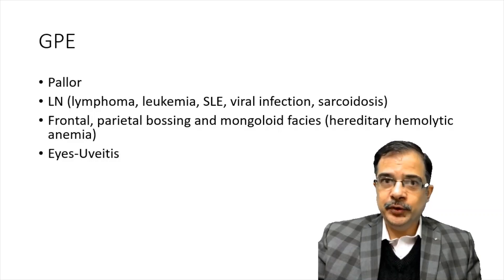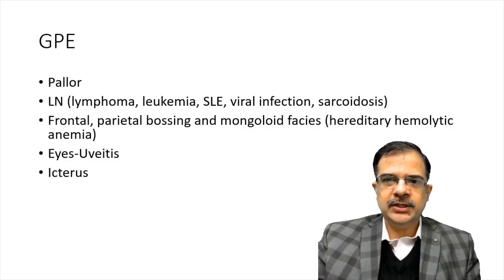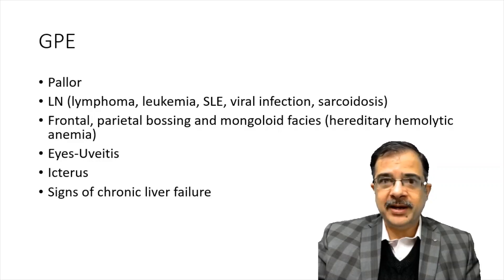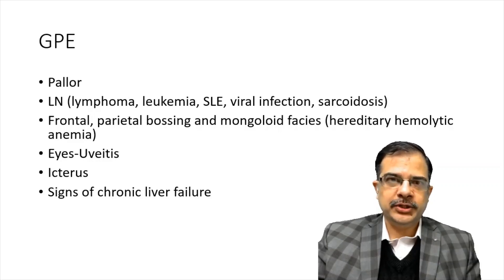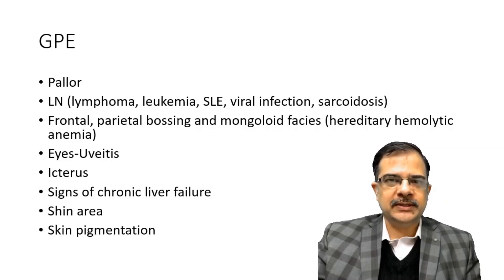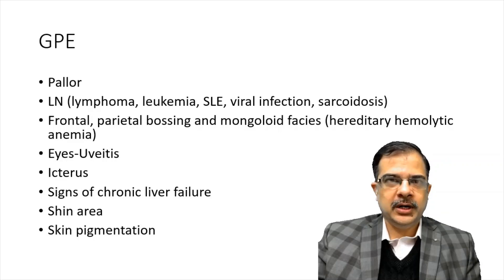While hemolytic anemia does cause splenomegaly, we will be looking for some bone changes. In the eyes, uveitis will be present if it is a case of sarcoidosis. Icterus for cirrhosis. Signs of chronic liver failure will be looked for — like spider nevi, Dupuytren's contractures, ascites. The skin area should be looked for erythema nodosum, which is present in sarcoidosis. Skin pigmentation should be looked for especially in cases of kala-azar patients.